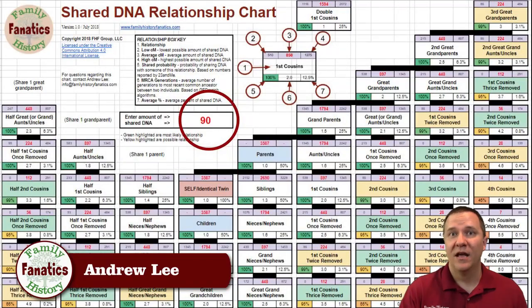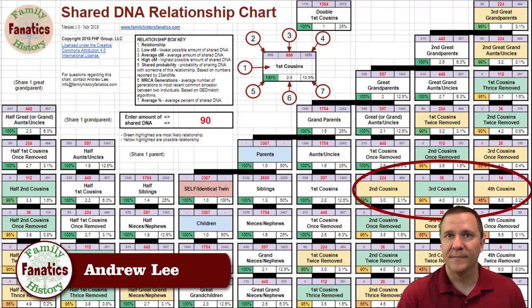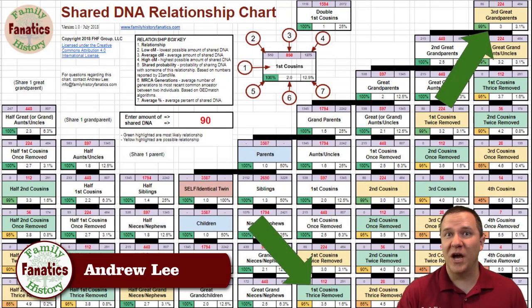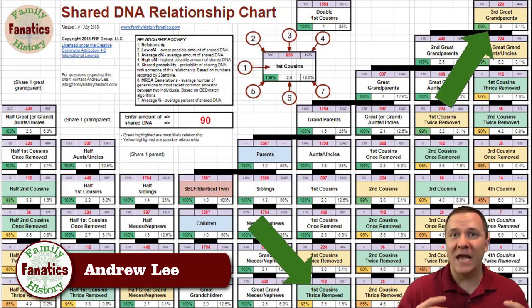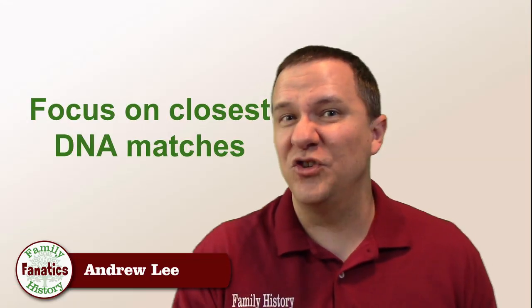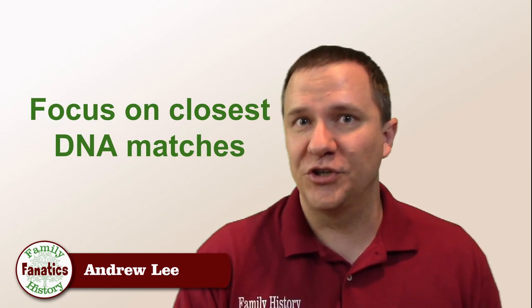Let's look at this another way by using a relationship calculator. If we put in the amount of shared DNA we would expect to see on the low end of the second cousin level — say 90 centimorgans — you can see that the potential range of relationships actually covers second, third, and fourth cousins, but it also covers up to your third great grandparent and down to your first cousin three times removed. So there is a big amount of overlap, and this is why you should focus on the people you are most closely related to genetically when you're starting your search.